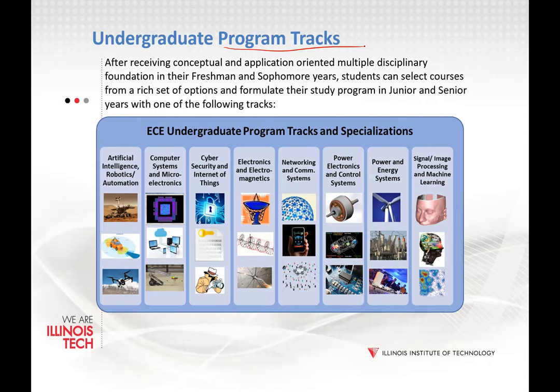These are called program tracks. We have about eight tracks, starting from artificial intelligence and robotics, all the way to signal and image processing and machine learning. We have a guide for each track with the courses listed, and students discuss it with their advisors. Around your junior year, you'll start making decisions about what track to follow — it gives you a career path direction even before you complete your coursework.